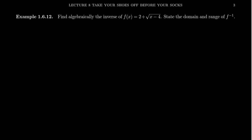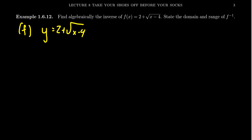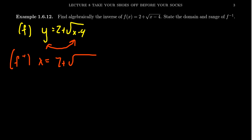Let's look at another example. We have a function f of x which equals 2 plus the square root of x minus 4. So the formula that defines f is going to be y equals 2 plus the square root of x minus 4. Switching to the inverse function, the equation that will define f inverse will be created by swapping the roles of x and y — the y becomes an x and the x becomes a y. Now we proceed to solve this by doing all the inverse operations.